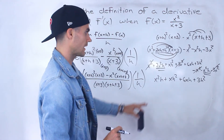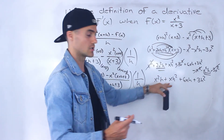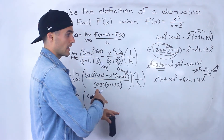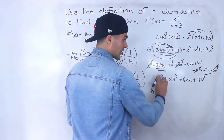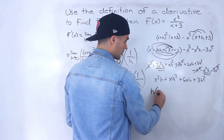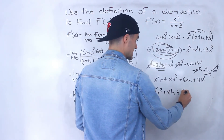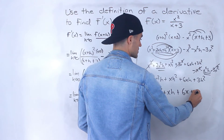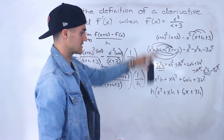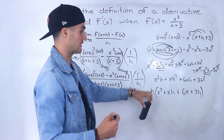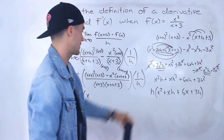Notice that in all of these terms, there's an h, so I can factor out an h. I'll do it over here because it will be easier. Factoring out an h from all these expressions, I'll be left with x squared plus xh plus 6x plus 3h. So it simplified to those terms after combining like terms, then I factored out the h and got that.